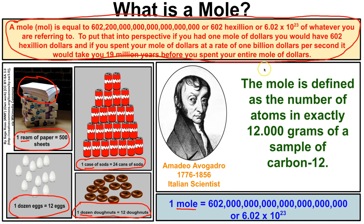This number is known as Avogadro's number, named after Amadeo Avogadro, an Italian scientist who lived between 1776 and 1856. It was not Avogadro himself who discovered the relationship between the amount of atoms and the mass of a particular atom — we simply give it that name to commemorate his contributions to science.